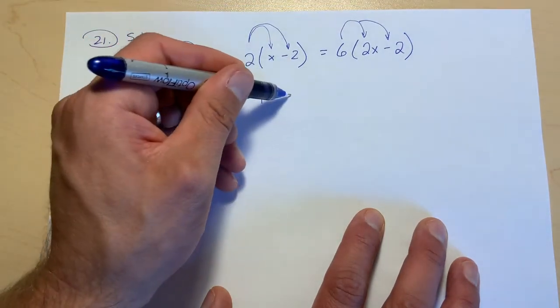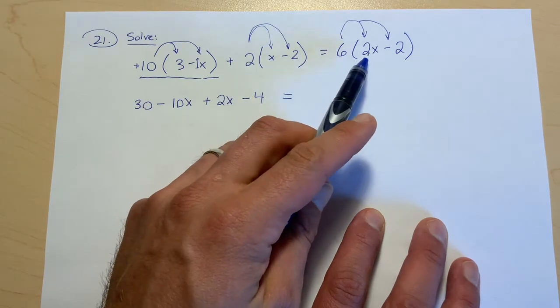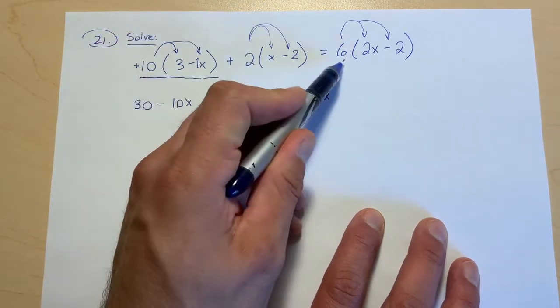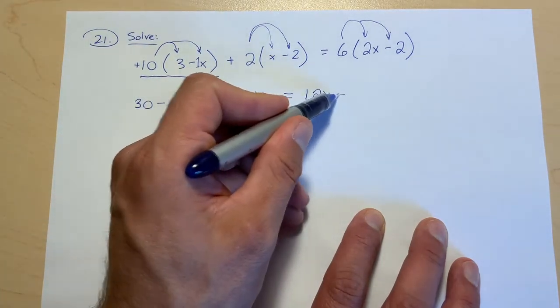Equal sign. 6 and 2x gives us 12x, and 6 times negative 2 gives us negative 12.